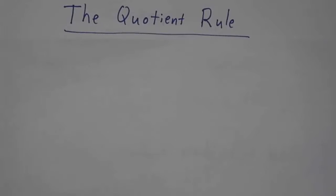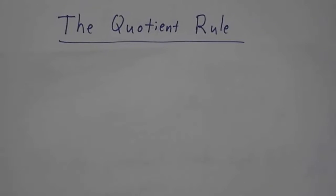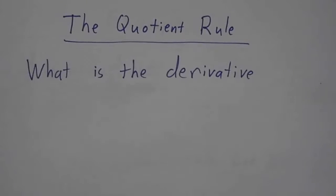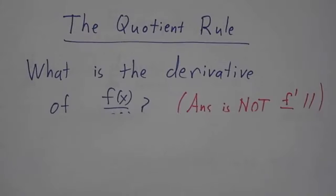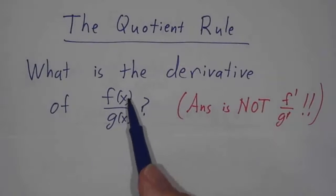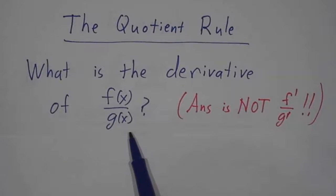So far we've seen how to take the derivatives of some basic functions like x to the n, sine, cosine, exponentials, and we've seen how to take products. So now we're going to look at quotients. The basic question is, if we've got two functions that we understand and we want to take the derivative of the ratio, what's the derivative of the ratio?